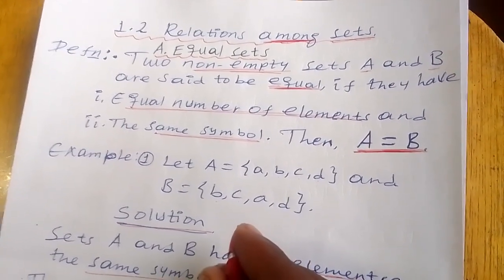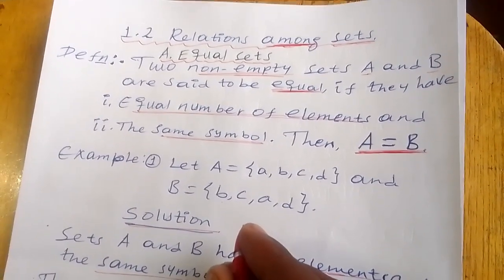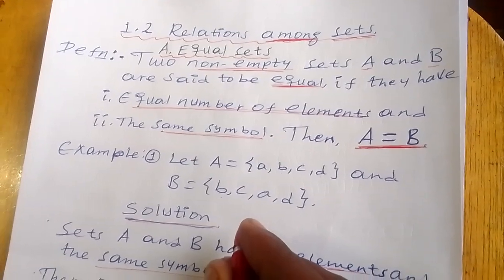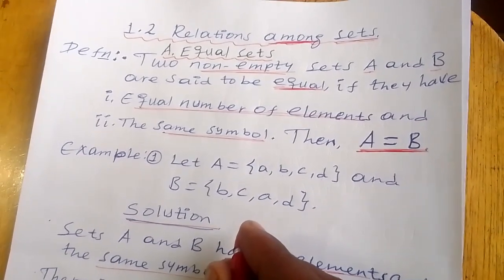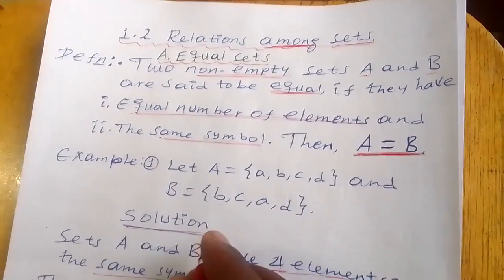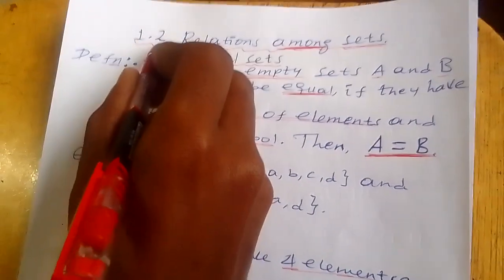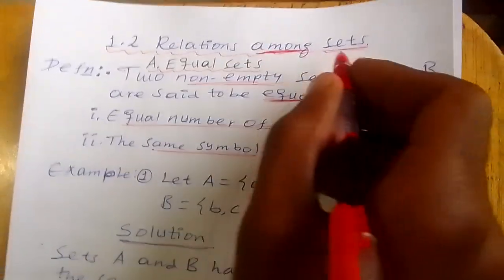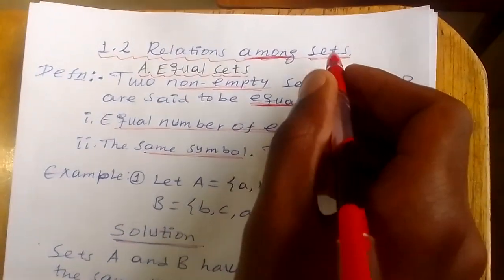This is Unit 1 Part 3. Okay students, section 1.2: Relations Among Sets.